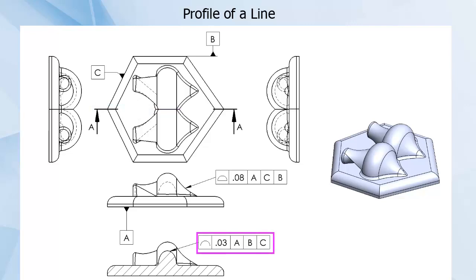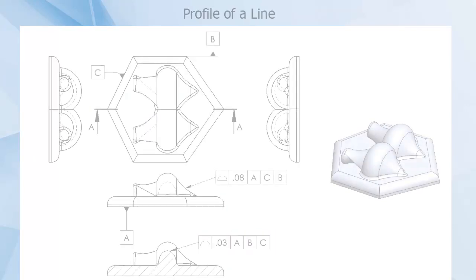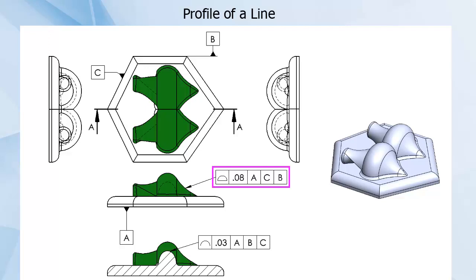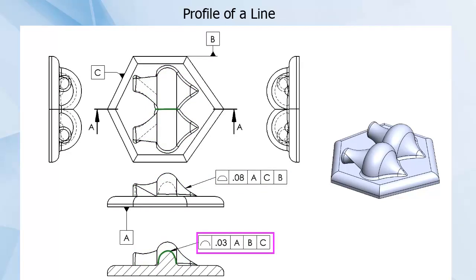a tighter profile of a line tolerance could be called out only for this midpoint line. This would mean that a laser scan or CMM of the part would allow a 0.08 mm tolerance everywhere, but only the 0.03 mm tolerance along this single line.